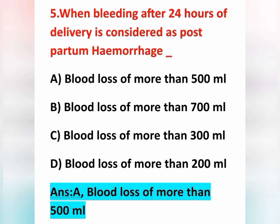In normal delivery, blood loss of 500 ml is considered normal. In cesarean section, 1000 ml is considered normal. One of the most important and common causes of postpartum hemorrhage is atonicity of the uterus. Option A is the correct answer.